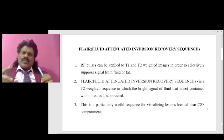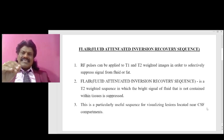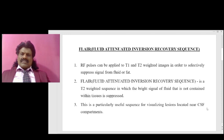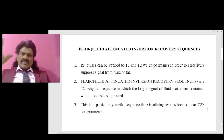What exactly is FLAIR? RF pulses can be applied to T1 and T2 weighted images in order to selectively suppress signal from fluid or fat — and fluid here means CSF. FLAIR is a T2 weighted sequence in which the bright signal of fluid not contained within tissues is suppressed, so the CSF signal appears dark instead of bright.